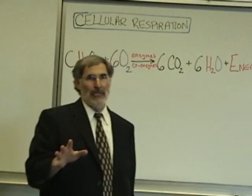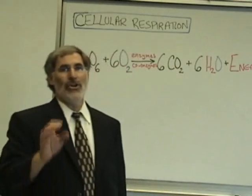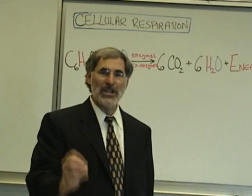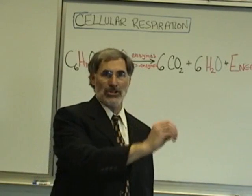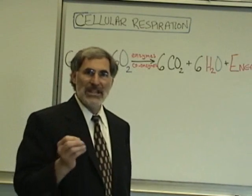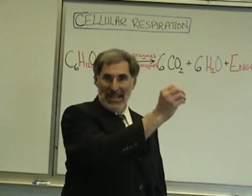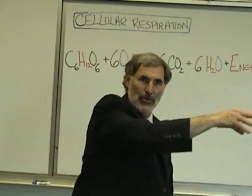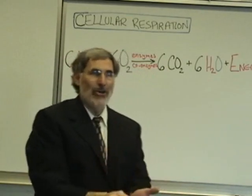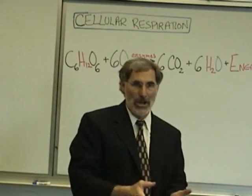If you've ever gone to a laundromat, all the washing machines and dryers only take quarters. You have to have quarters in order to wash and dry your clothes. What if you had a $10 bill? You have to go to a change machine in the laundromat, stick the $10 bill in, and out comes 40 quarters. Now you can wash and dry your clothes.